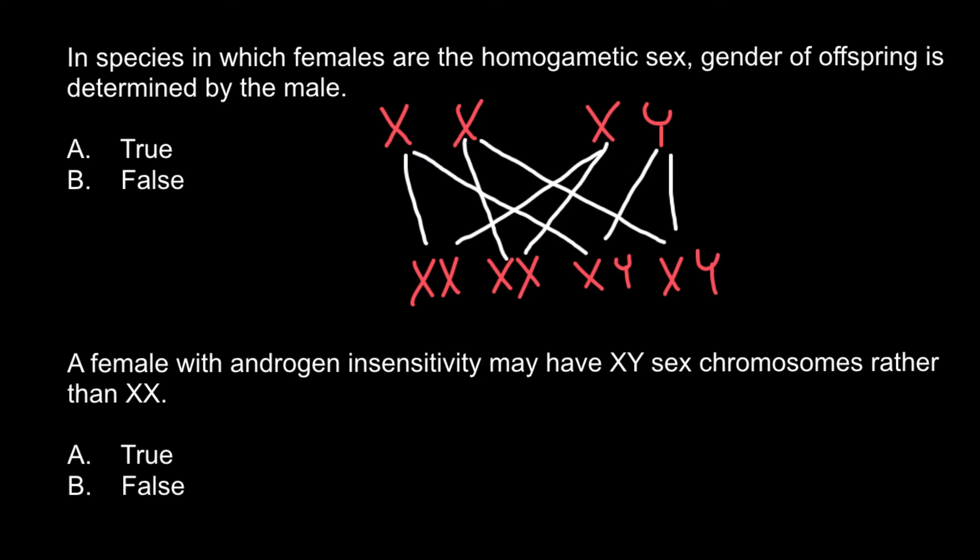But there are also different sex determination systems exist. For example, in birds, we call sex determination system ZW. And in that sex determination system, females would be heterogametic and males would be homogametic. So in birds, female defines the sex of the progeny.